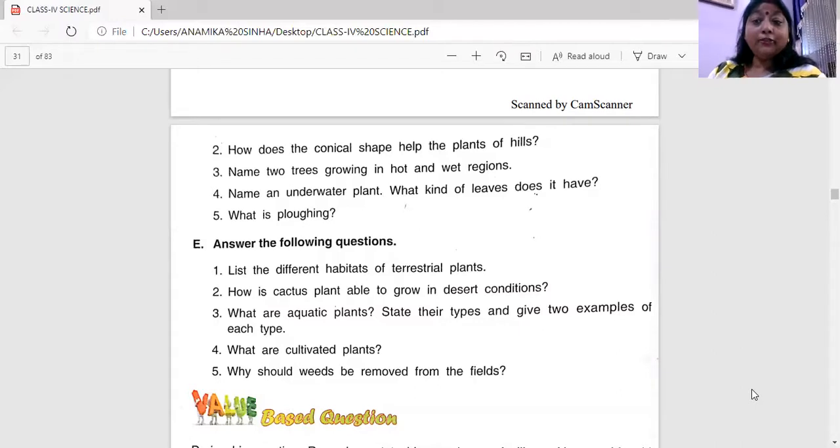Pine and Cedar. Plants of the plain. Number two, plants of the plain. Then there will be peepal, banyan, onion, mango. These are all plain areas. Plants of hot and wet regions. Coconut and rubber. Plants of marshy area. Mangrove. Plants of desert. Cactus.